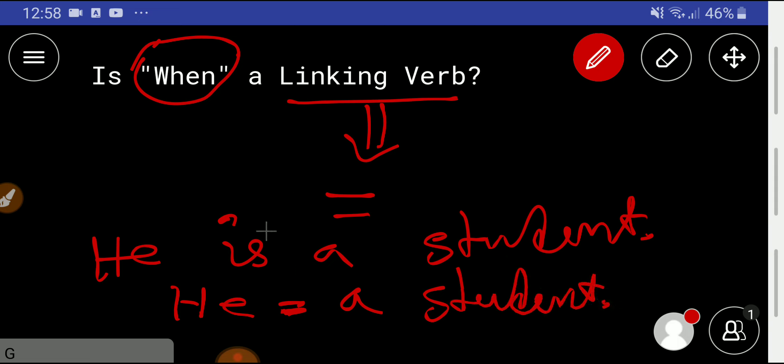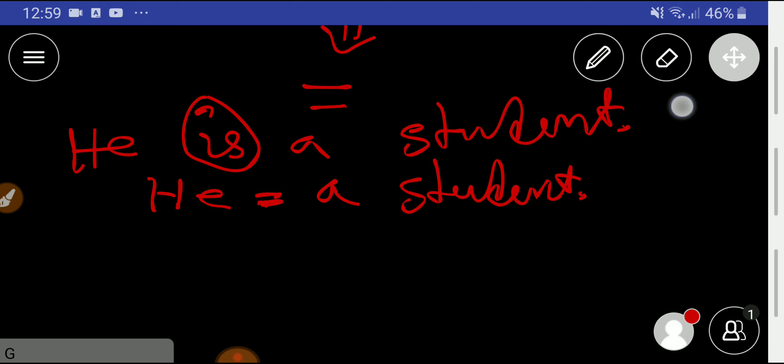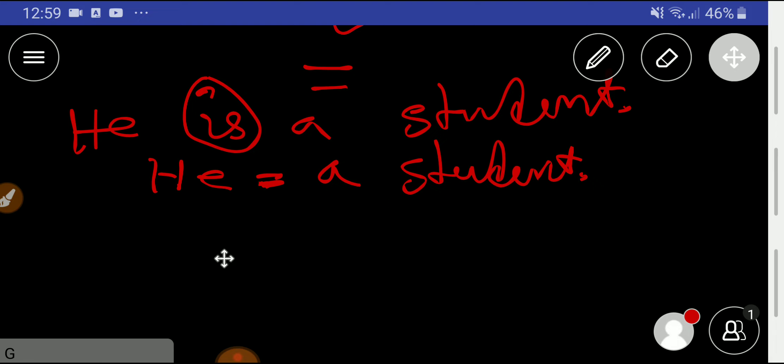This 'is' is a linking verb. It is not expressing any action. So the linking verb functions as an equal sign. Now let me give you another example of a linking verb.